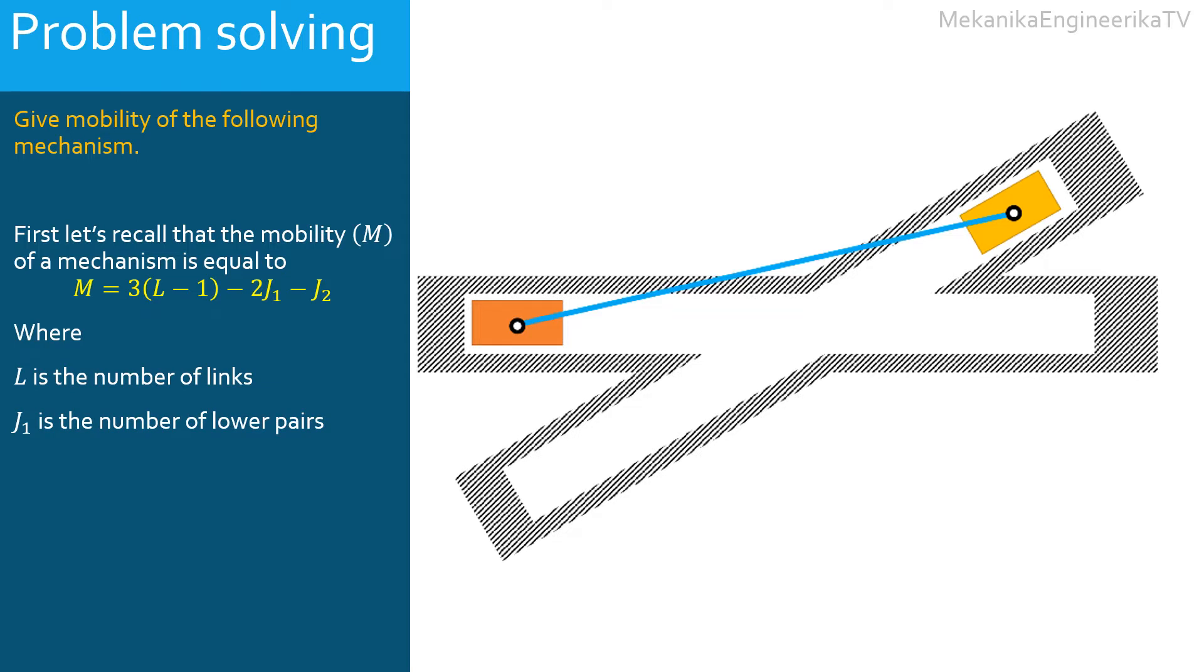J1 is the number of lower pairs, the number of kinematic pairs that each allow 1 degree of freedom. And J2 is the number of higher pairs, the number of kinematic pairs that each allow 2 degrees of freedom.